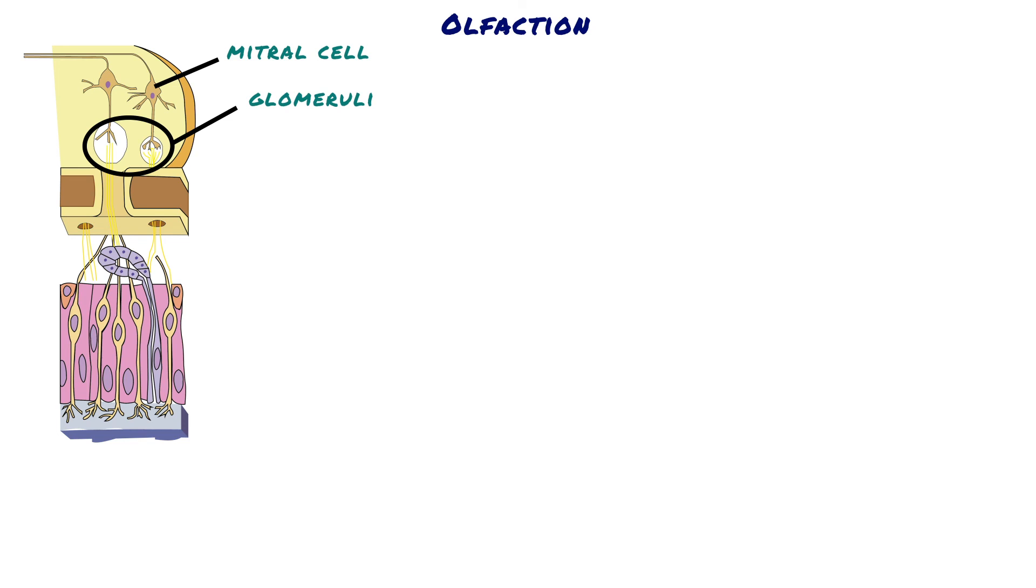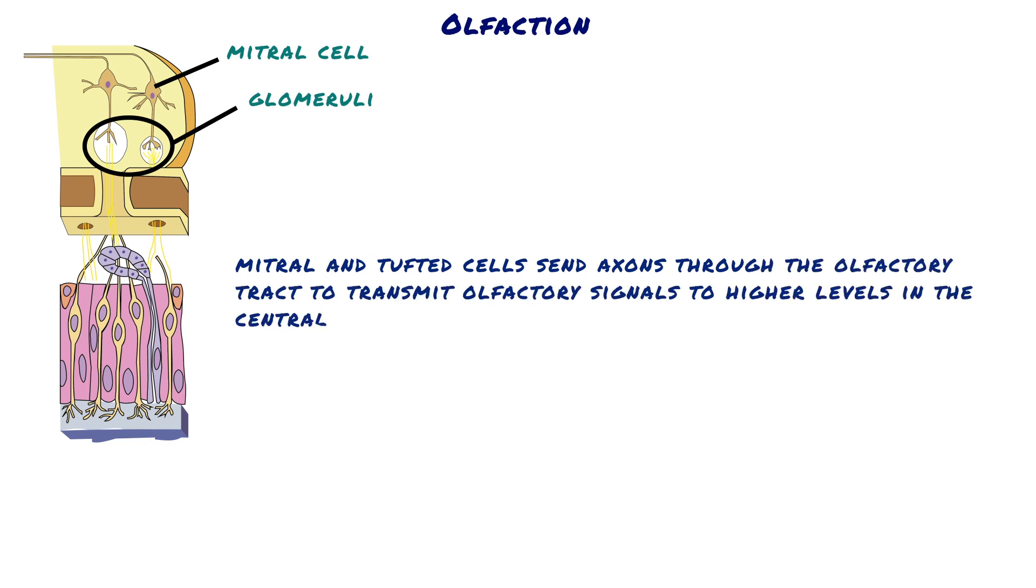These dendrites receive synapses from the olfactory cell neurons, and the mitral and tufted cells send axons through the olfactory tract to transmit olfactory signals to higher levels in the central nervous system.